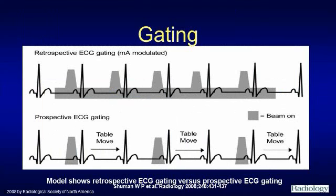Let's discuss the two different kinds of gating: retrospective gating and prospective gating. Some scanners are not capable of prospective gating. The advantage of prospective gating is that a much lower radiation dose is administered. The advantage of retrospective gating is that we image over time and can perform functional analysis of the valve. Even with retrospective gating, we can limit the dose by applying the maximum dose at the optimal point in the RR cycle for imaging the heart and coronary arteries.